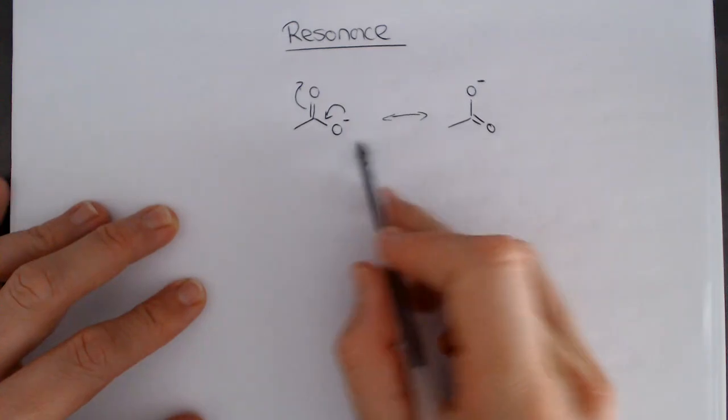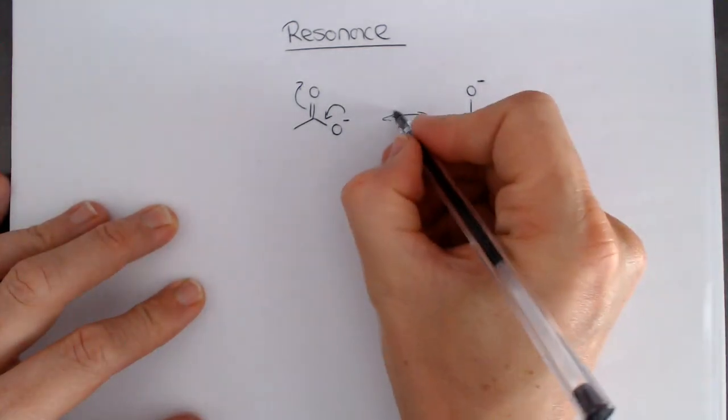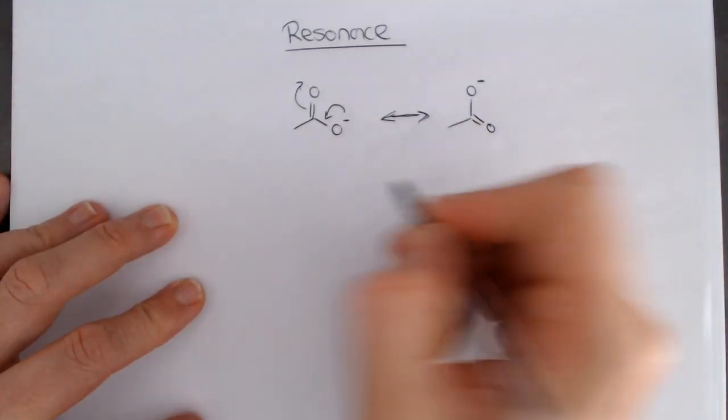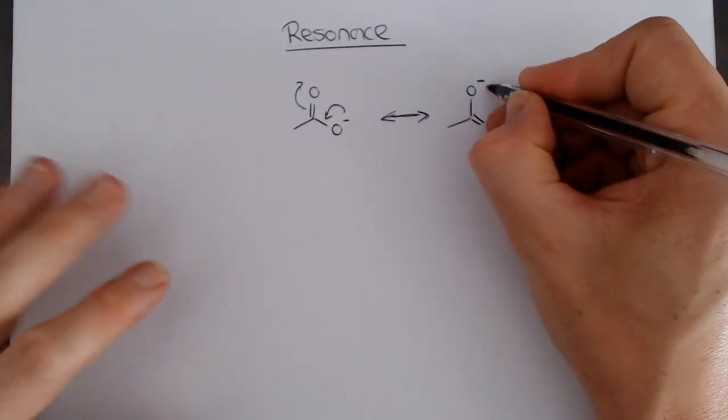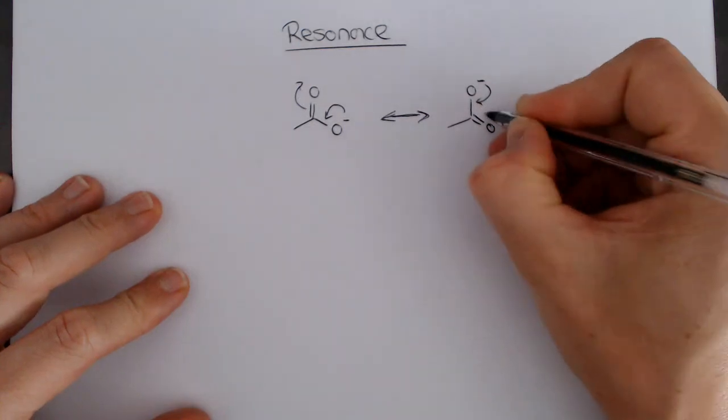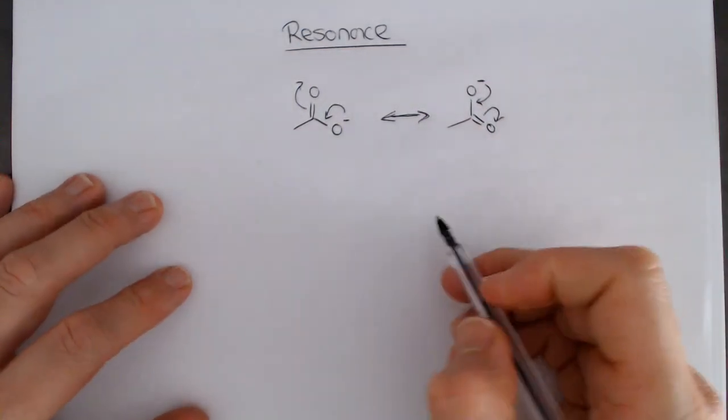Some of the key things that are important here is this resonance arrow, special arrow that we need to use, and we can also draw these curly arrows. Of course, in resonance or delocalization, these things must be able to go in reverse.